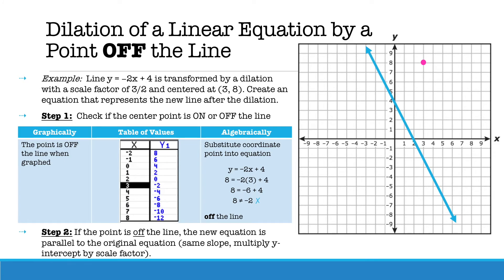Since the point is off the line, the new equation will be parallel to the original equation. So you're going to look at your slope, which will be the same, and your y-intercept will change.